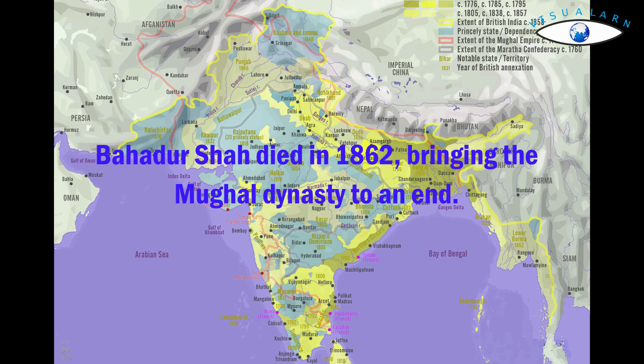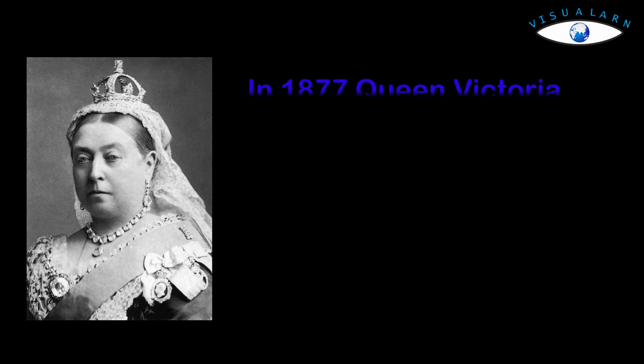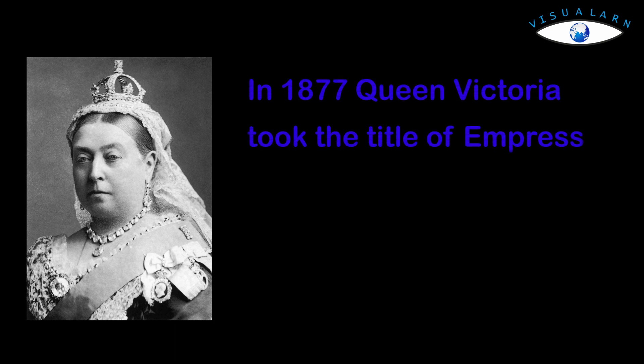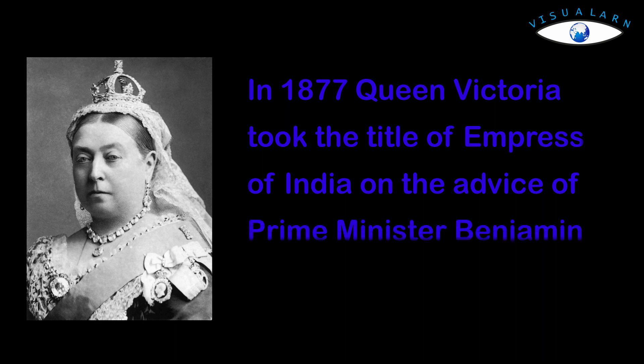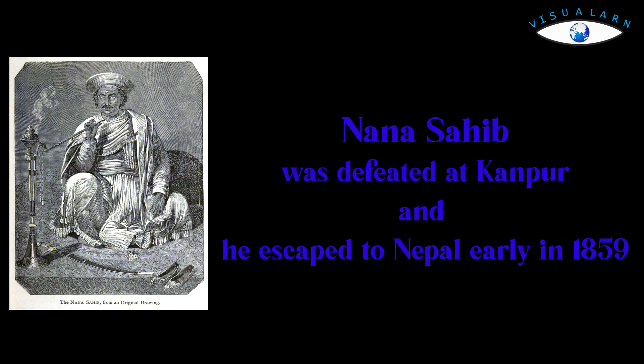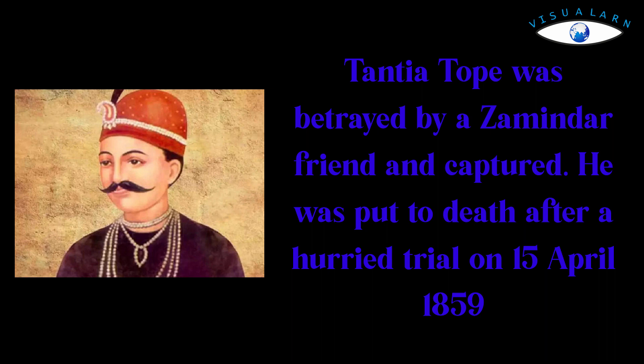With the fall of Delhi, the focus point of the revolt disappeared. Nana Sahib was defeated at Kanpur. He escaped to Nepal early in 1859 and was never heard from again. Tantya Tope was betrayed by a zamindar friend and captured while asleep. He was put to death after a hurried trial on 15 April 1859.